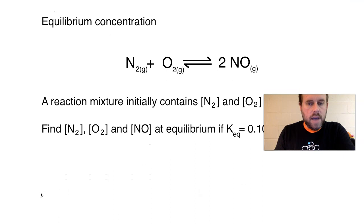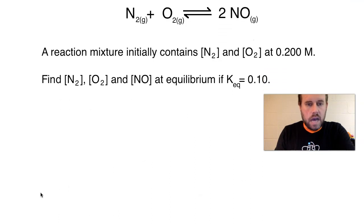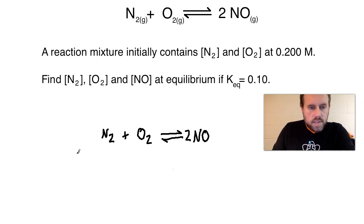So the first thing you have to do when you get problems like this is you need to set up an ICE chart. So it's usually a good idea to rewrite the problem, or not the whole problem, but the expression itself, the actual chemical reaction. So if I were to rewrite the equation, what I have is N2 plus O2, and that is in equilibrium with the NO. There's two of those there to balance the equation. So over to the side, I'm going to set up my ICE table or ICE chart, and I'll label it as ICE.